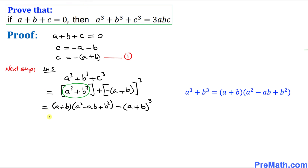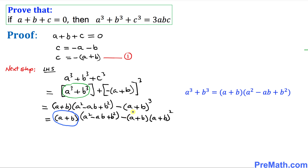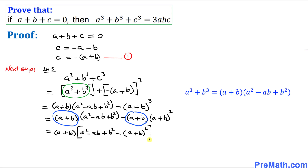In the next step, I can write this as a plus b times a² minus ab plus b², and the cubed term can be written as minus a plus b times a plus b squared. You can see that I can factor out a plus b from both parts. Factoring that out, we are left with a plus b times, in brackets, a² minus ab plus b² minus a plus b squared.